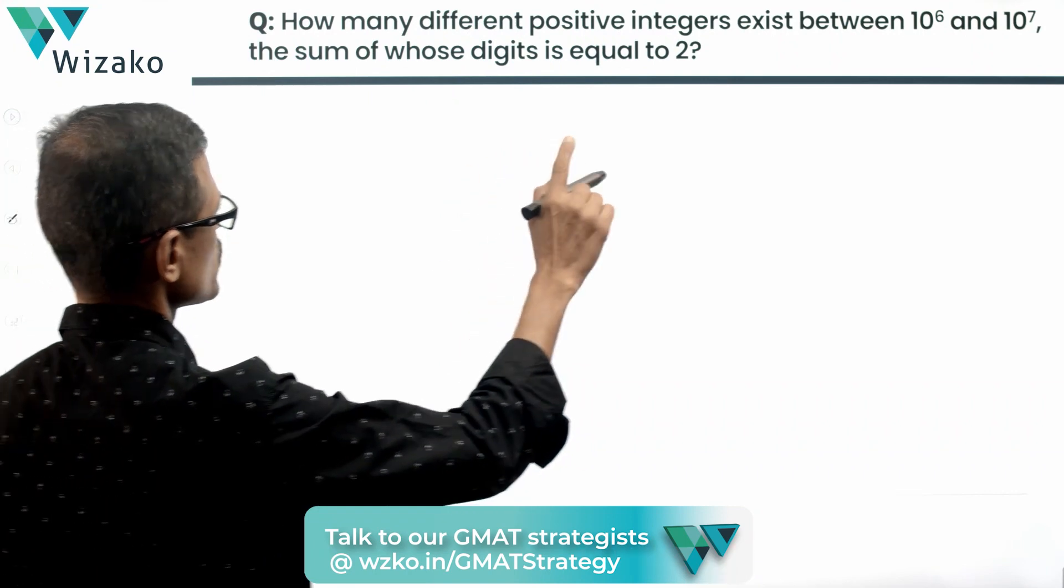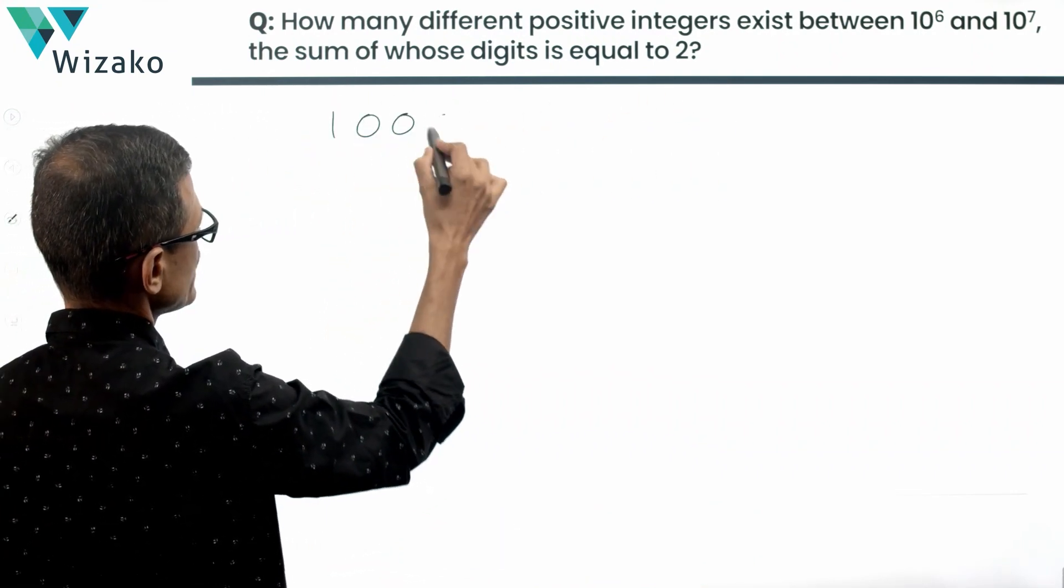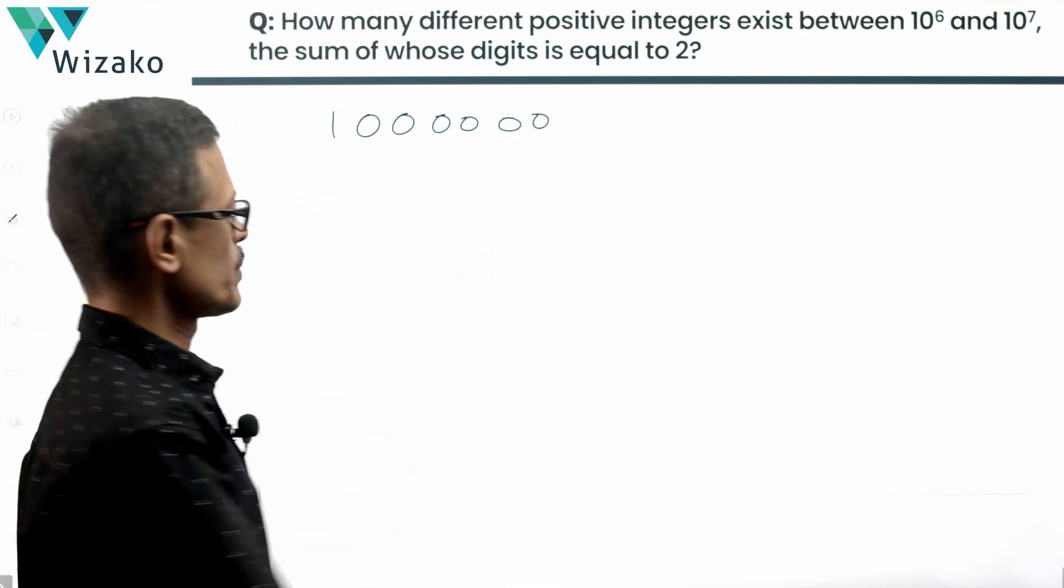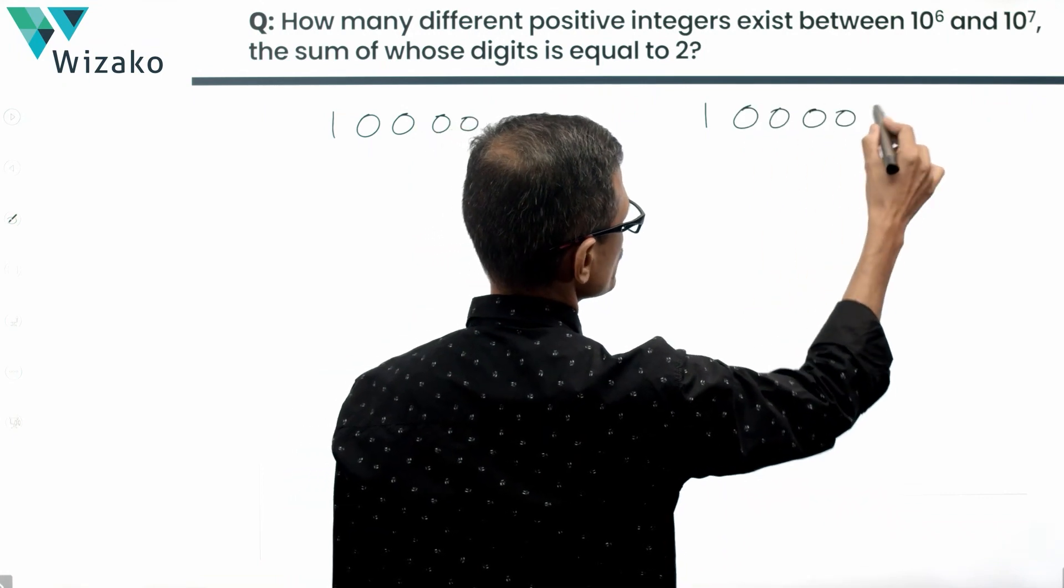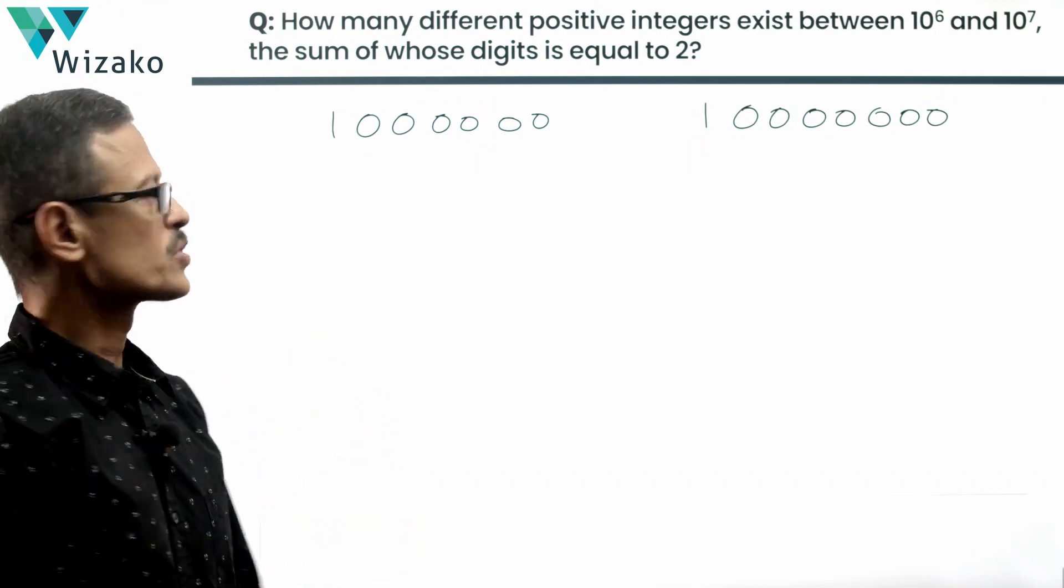We'll start by finding out what is 10 raised to the power of 6 and 10 raised to the power of 7. 10 raised to the power of 6 is 1 followed by 6 zeros, so this 7 digit number is 10 raised to the power of 6. The 8 digit number starting with 1 followed by 7 zeros is going to be 10 raised to the power of 7.